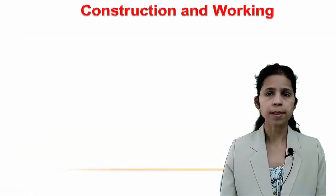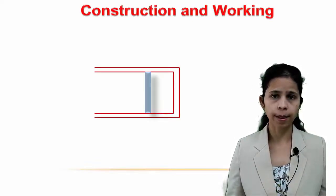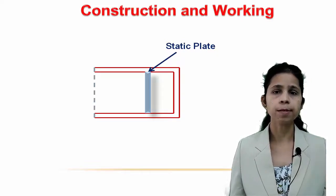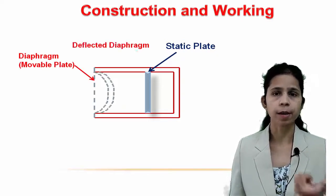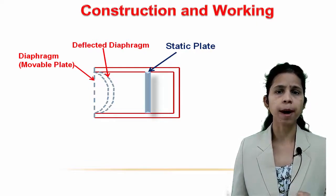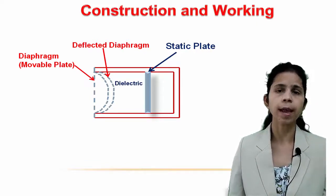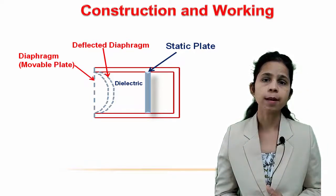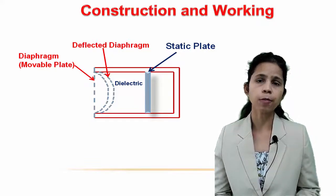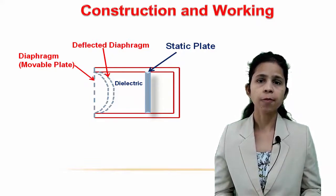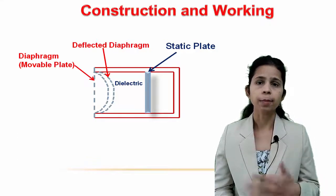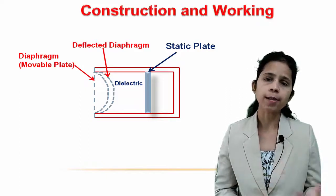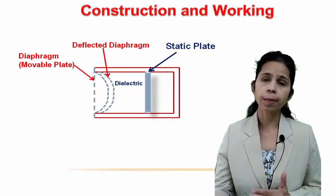The capacitive transducer consists of two parallel conducting plates, out of which one plate is fixed — the static plate — and another plate is movable, that is the diaphragm. Both plates are separated by a dielectric, usually air. The diaphragm can be made from a variety of materials such as glass, plastic, silicon, or ceramic to suit different applications.